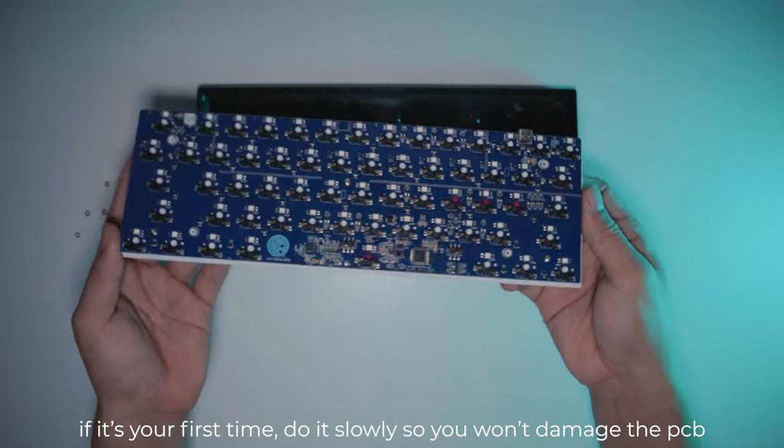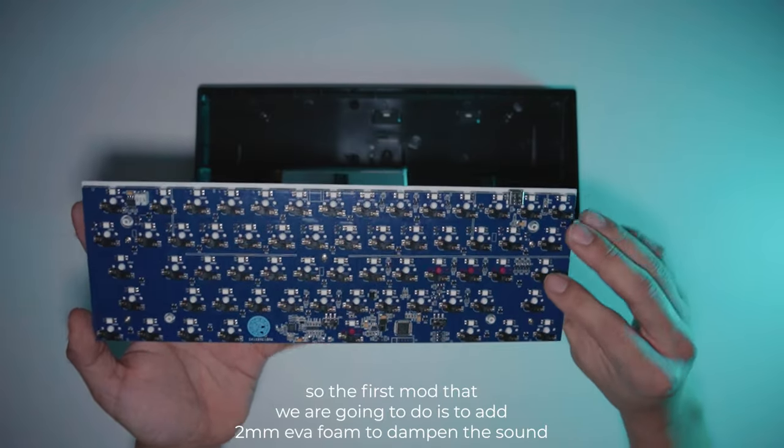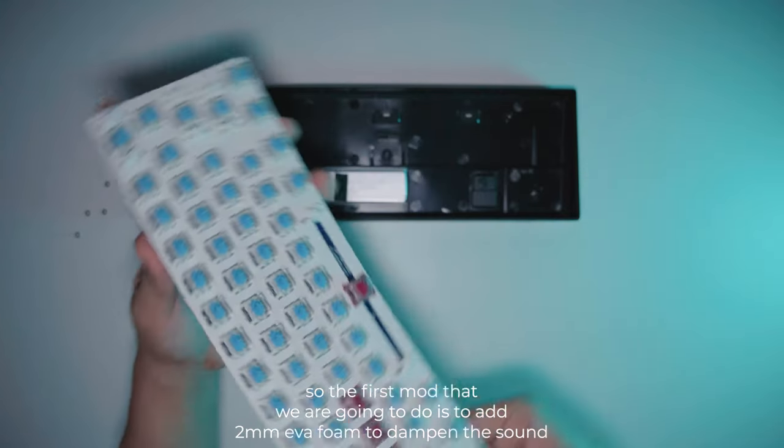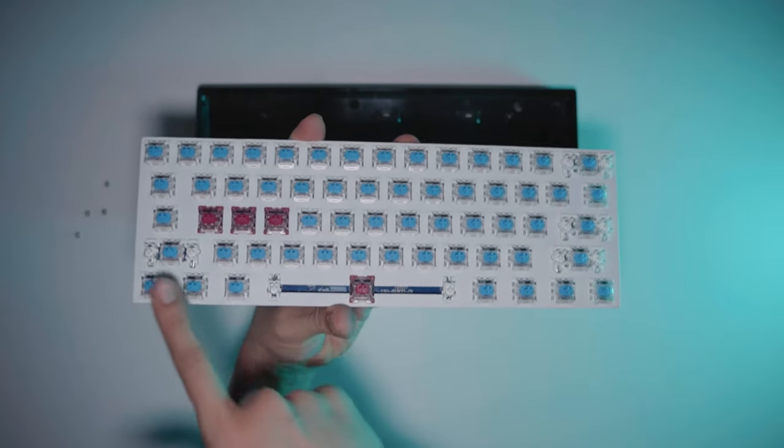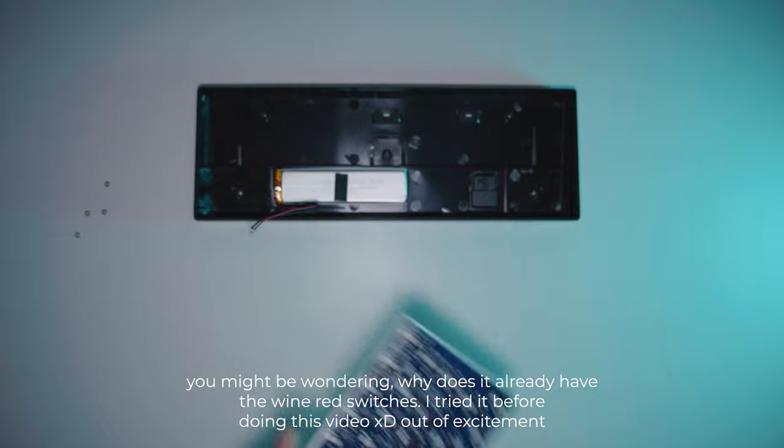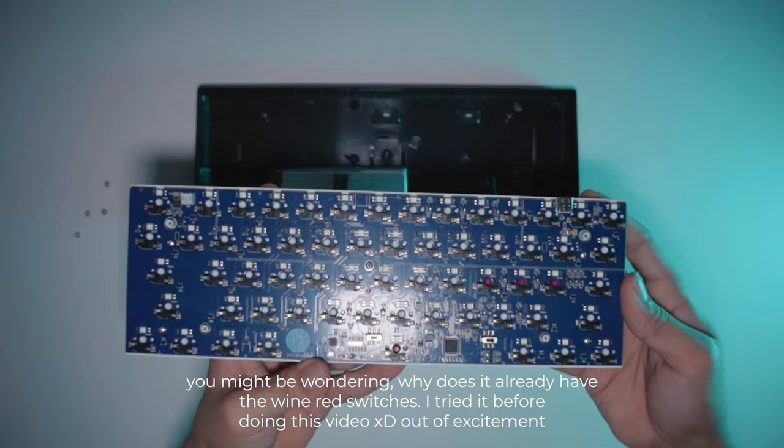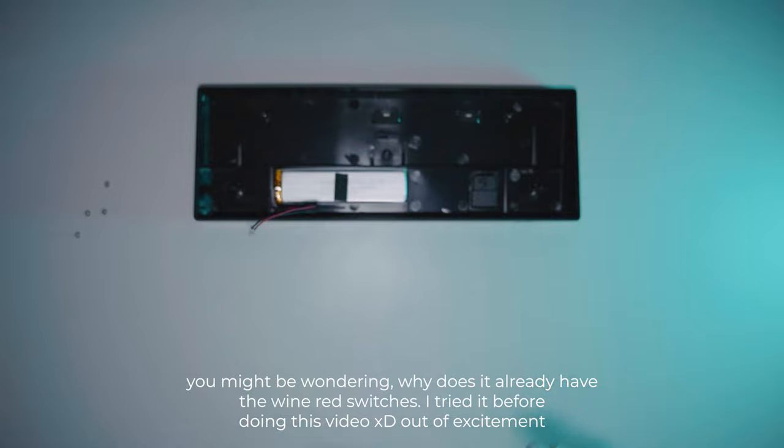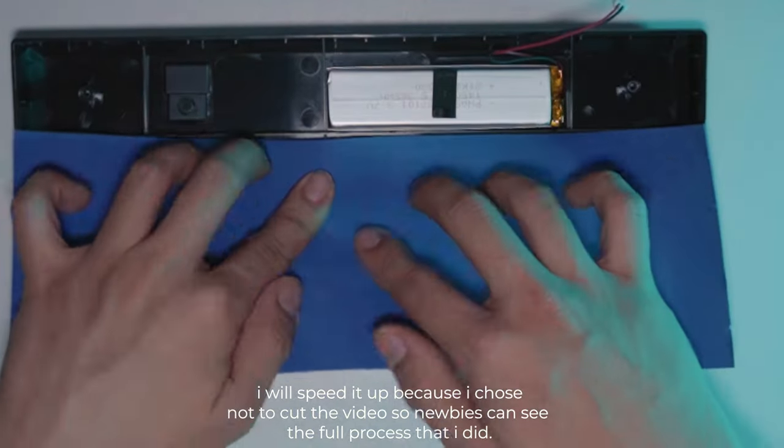For the first mod that we are going to do is adding foam between the PCB and the case. For the foam, I use EVA foam and the thickness is 2mm. Adding foam under the PCB is one of the most important things when modding your RK61. It is to dampen the sound because without it, your board will sound hollow.